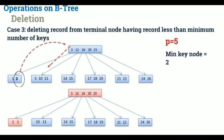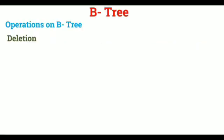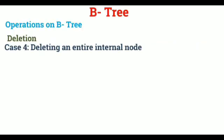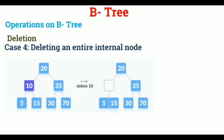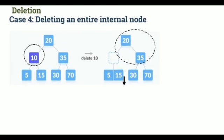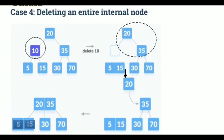The last case in deletion is deleting an entire internal node. See this binary tree. If we need to delete 10, 5 and 15 will be left with no parent. So, we should merge 20 and 35 forming a new parent. We have 2, 5 and 15 as well forming a single node with it a new parent 20.